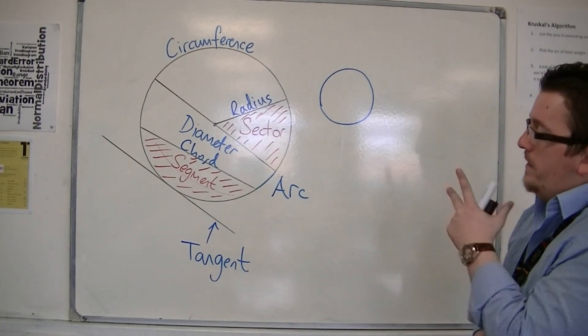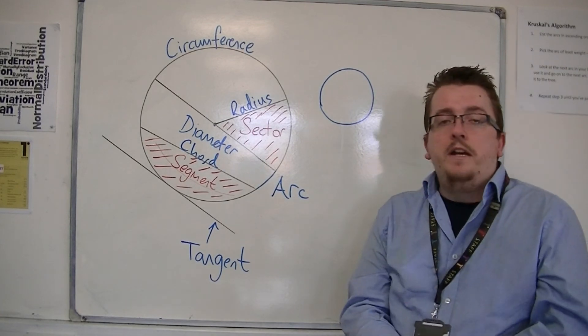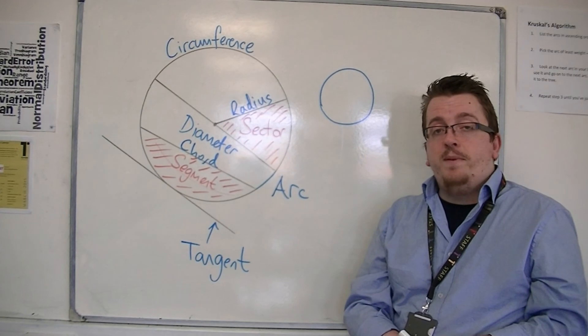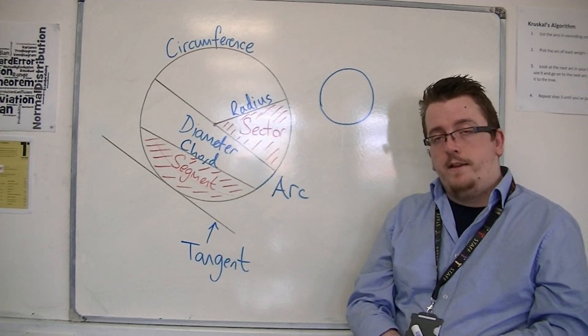So these are the names of the special parts of the circle. You need to know what these are, and you need to be able to label a diagram with their correct names.